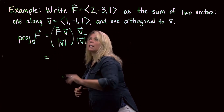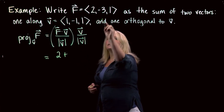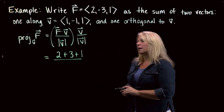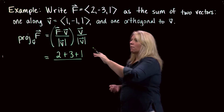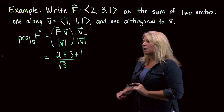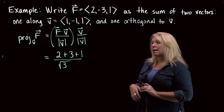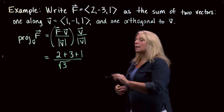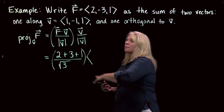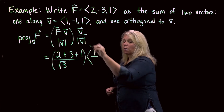Let's do this calculation. F·V: 2 times 1 is 2, plus negative 3 times negative 1 is 3, plus 1 times 1 is 1 — so 6 in the numerator. Then divide by the magnitude of V: square root of 1² + (−1)² + 1² = square root of 3. So the scalar is 6 over square root of 3. And the unit vector along V is V divided by its magnitude, giving components 1/√3, −1/√3, 1/√3.